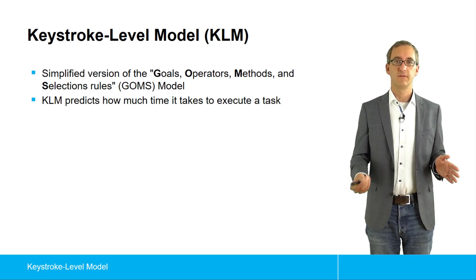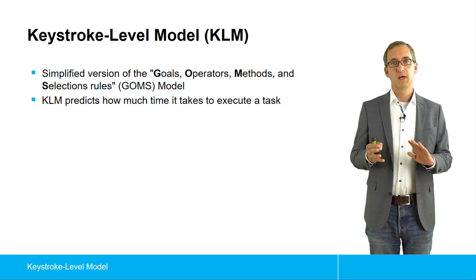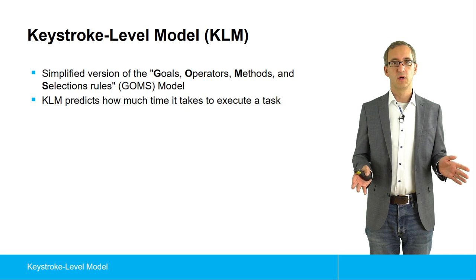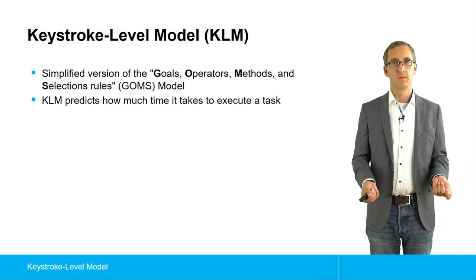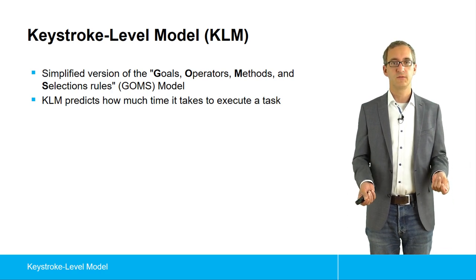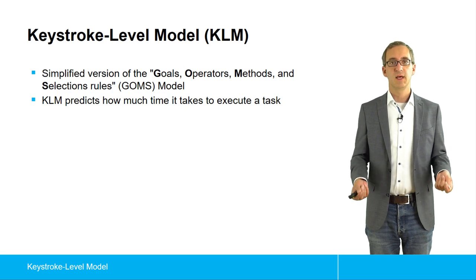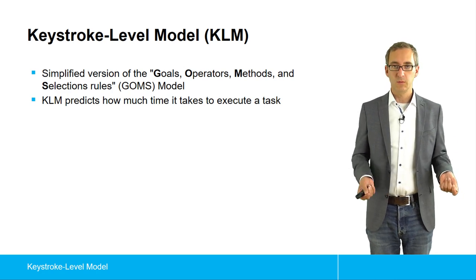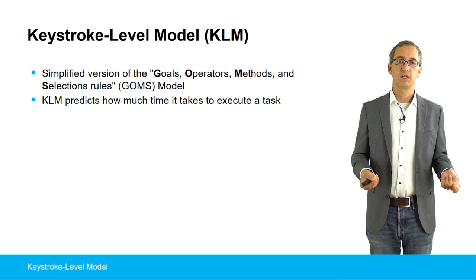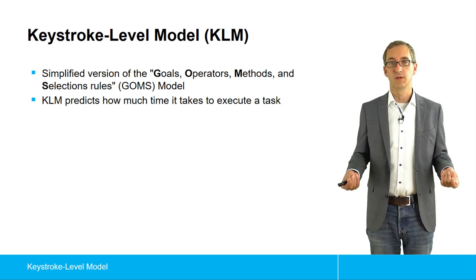KLM or the keystroke level model is part of a whole family of different models called the GOMS family. GOMS stands for goals, operators, methods, and selection rules. What we can do with KLM is predict how much time it takes to execute certain tasks.